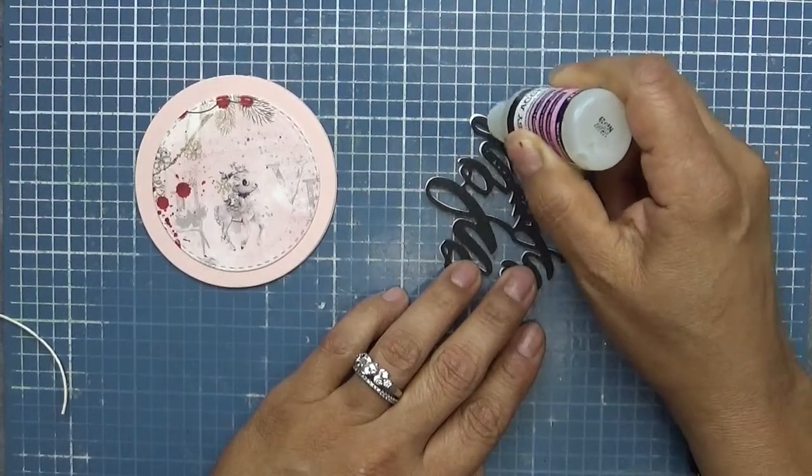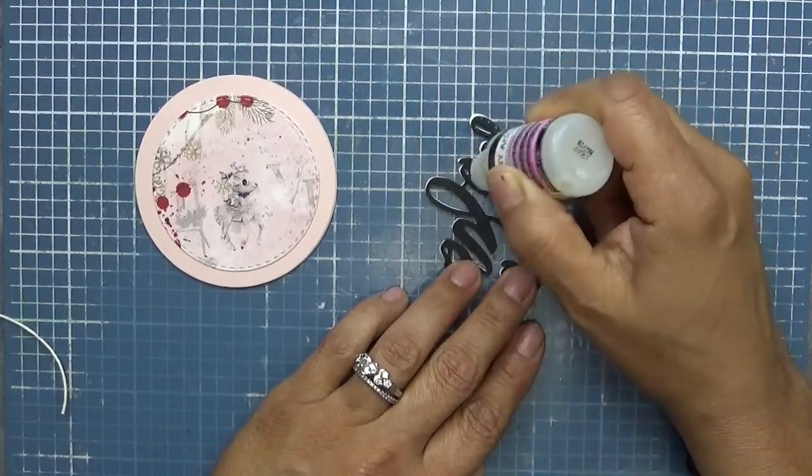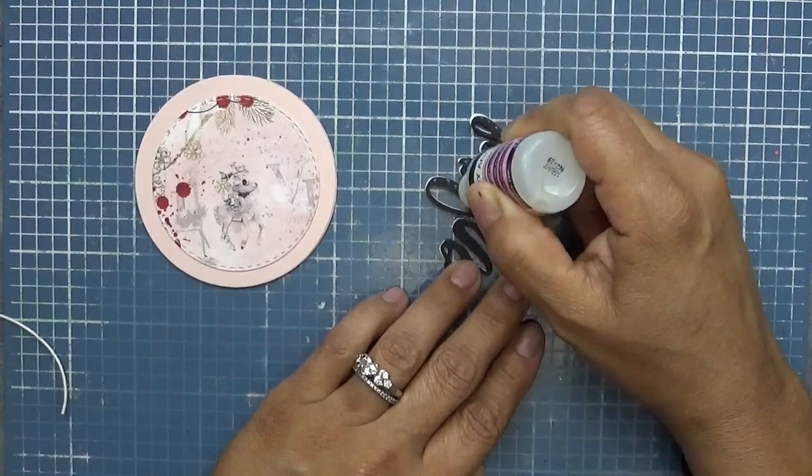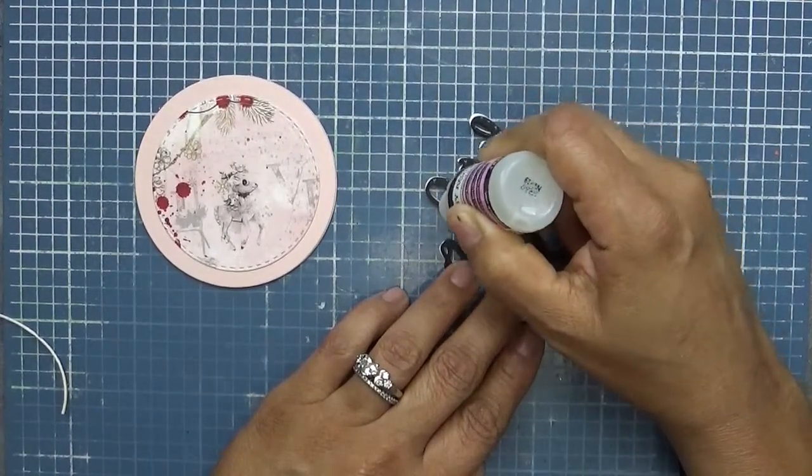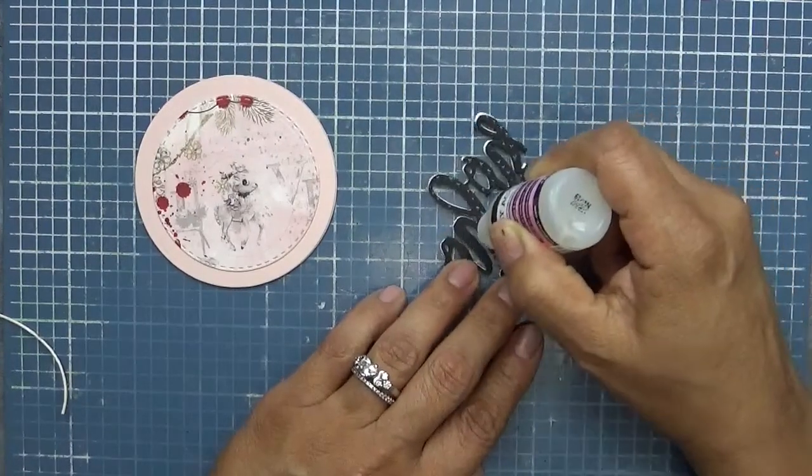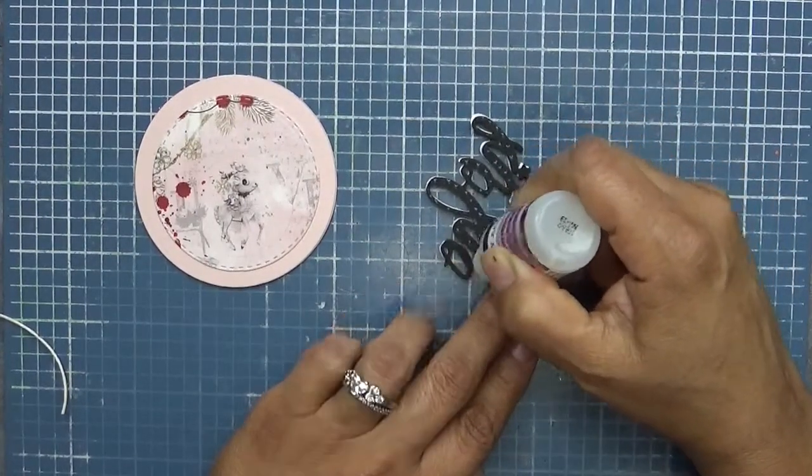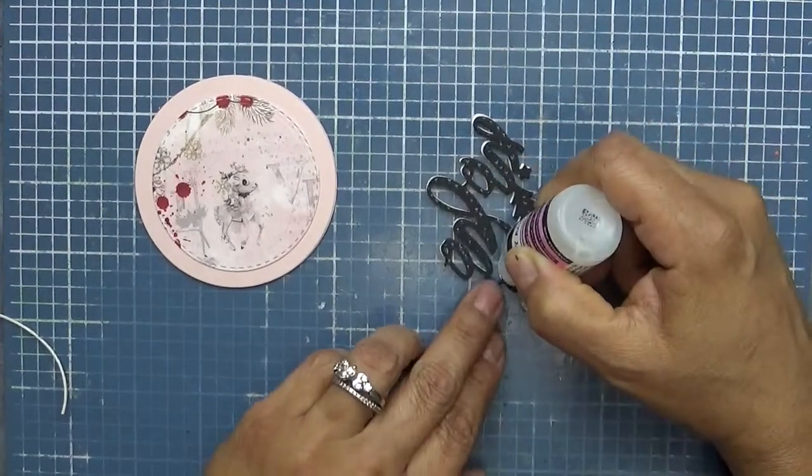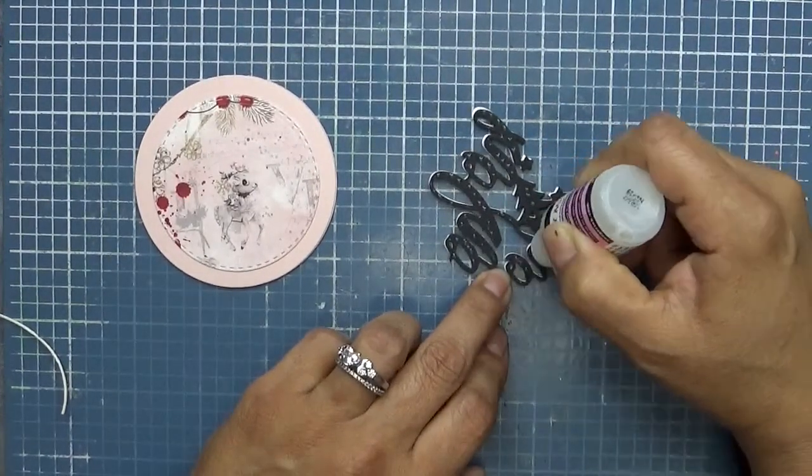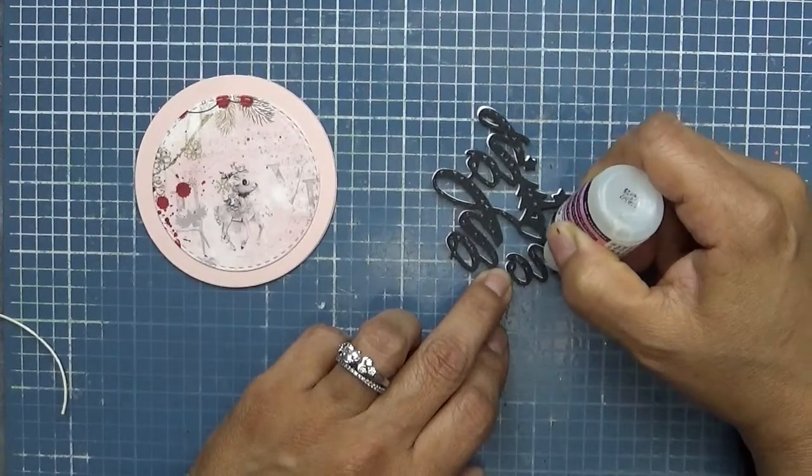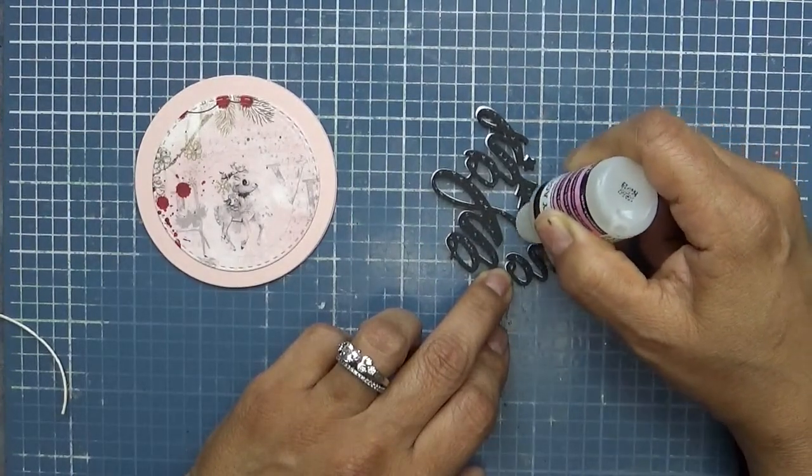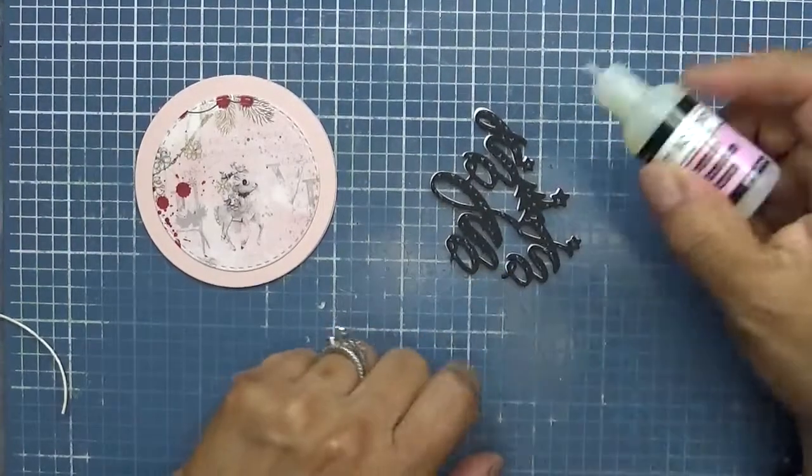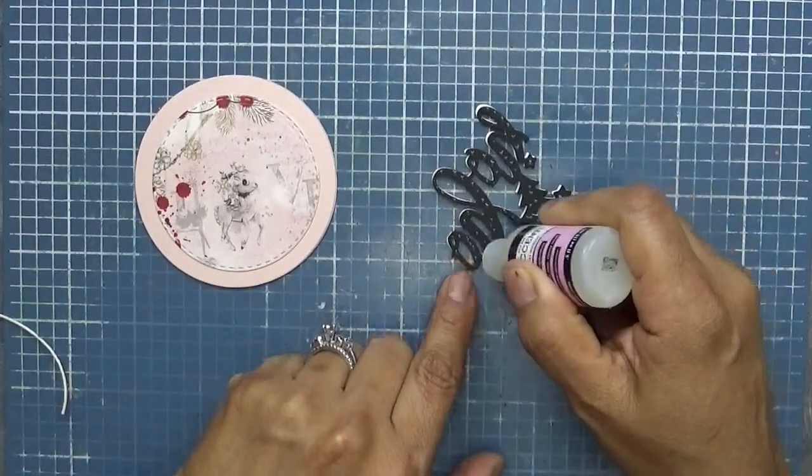And I love this adhesive. If you've been following me you know this stuff will not move, which I absolutely love. So I'm just going to get this on here really quick here. I just absolutely love these. This little three inch circle die, it's super duper cute. So let me do this.